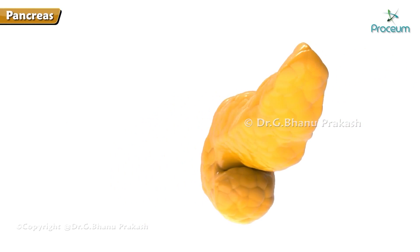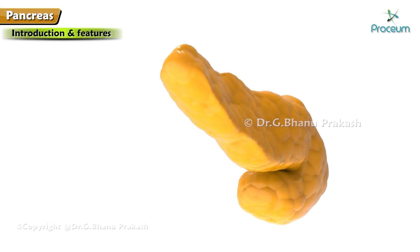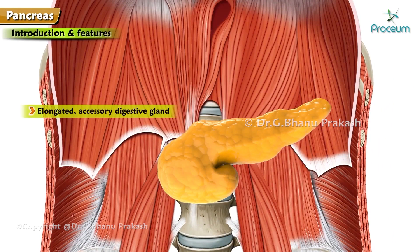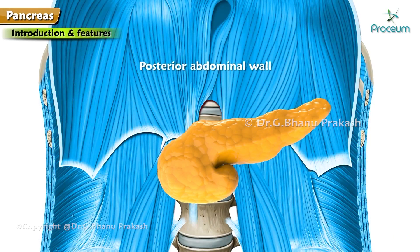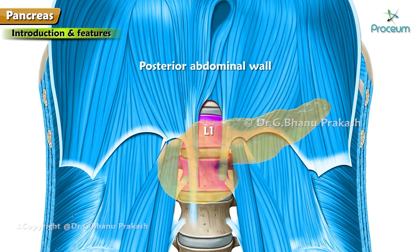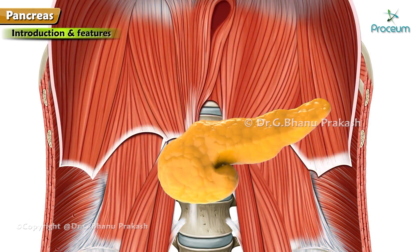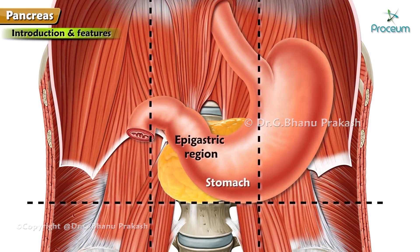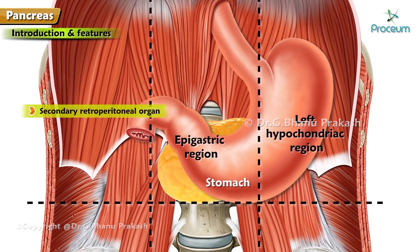The pancreas is an elongated accessory digestive gland that lies on the posterior abdominal wall at the level of L1 and L2 vertebrae. It lies mostly posterior to the stomach, in the epigastric and left hypochondriac regions. It is a secondary retroperitoneal organ.